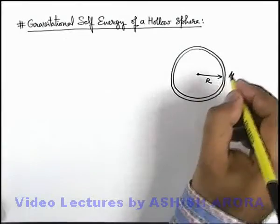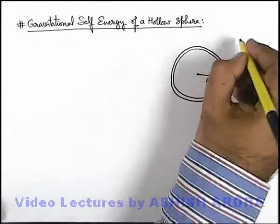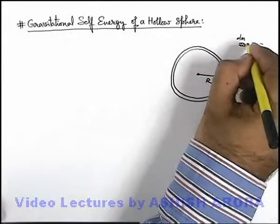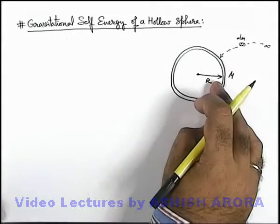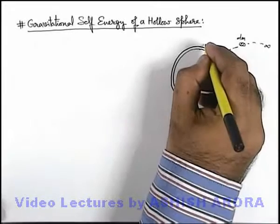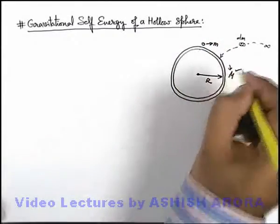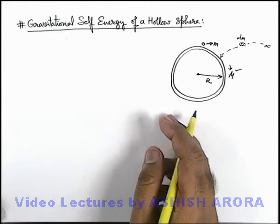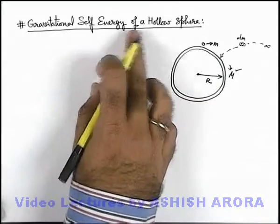Say we have a hollow sphere of mass M and radius R, and it is made by bringing elemental masses dm from infinity to the surface of radius R, one by one. Gradually, its mass is increased from zero up to capital M. We wish to find out the work done in the whole process, which will be taken as the gravitational self-energy of this hollow sphere.